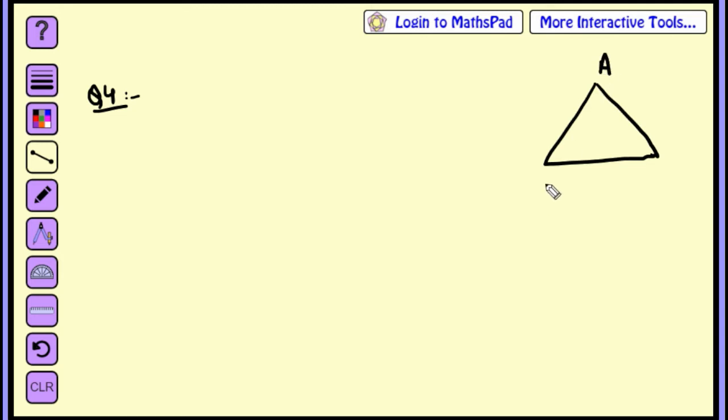We have to draw a triangle ABC. This is triangle ABC. In which AB is given as 2.5cm, BC is given as 6cm, and AC is given as 6.5cm. And we'll measure the angle B.